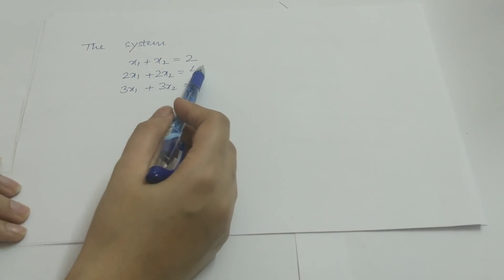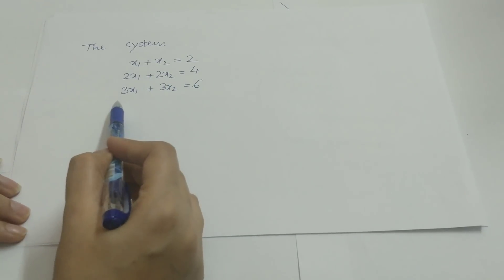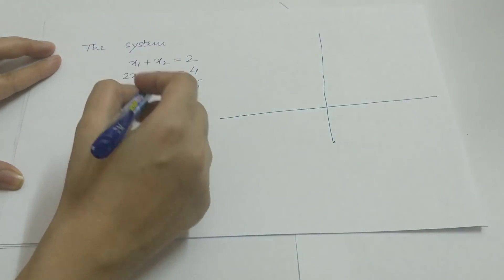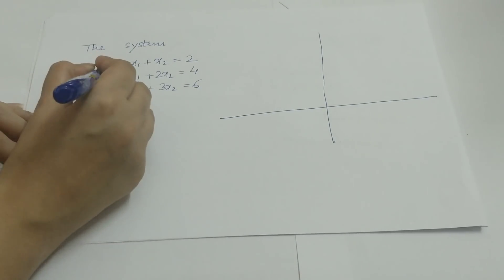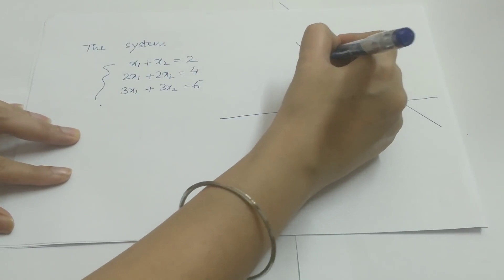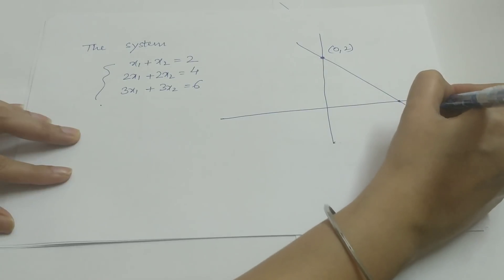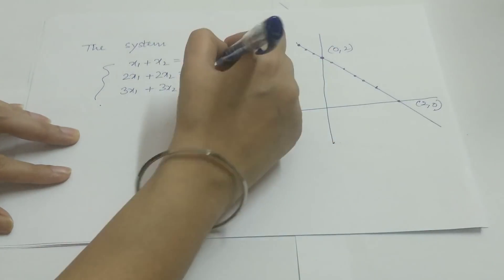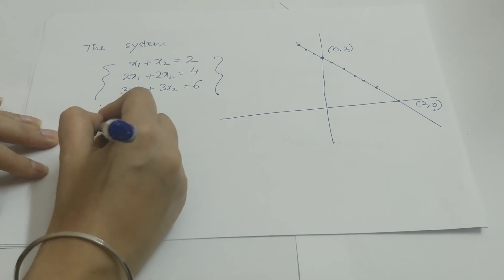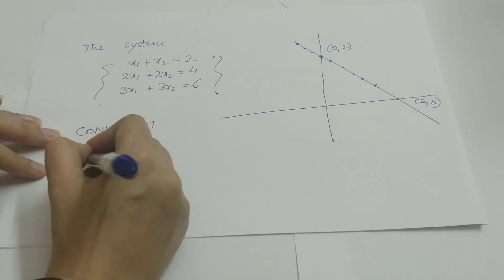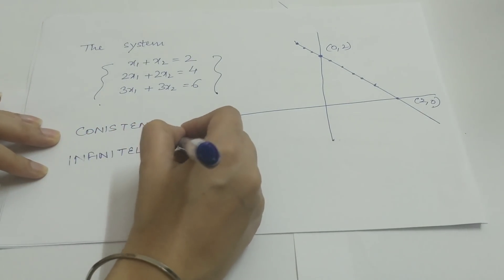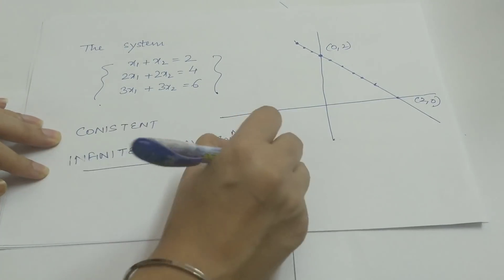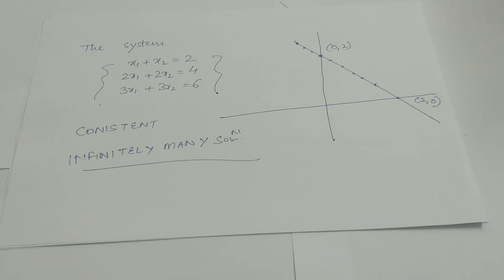Let us further take a look at another system: x1 + x2 = 2, 2x1 + 2x2 = 4, 3x1 + 3x2 = 6. Here again, we have three equations in two variables. Plotting the equations, we can see that all three equations correspond to the same straight line, which passes through (0,2) and (2,0). So all points that lie on this straight line satisfy all three equations. Thus, in this case the system is consistent with infinitely many solutions.